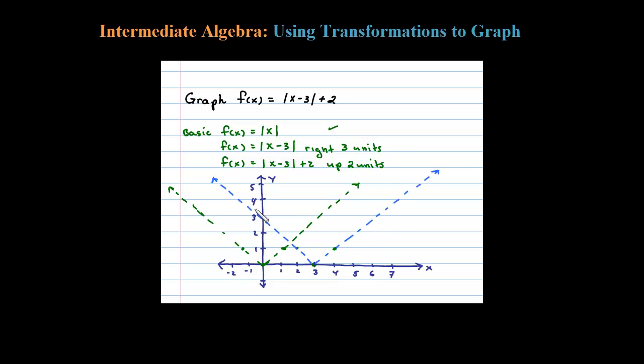Okay, and then the last translation is to shift that up two units. So the vertex would move up two units to here, this point here moving up two units, and this point here moved up two units would be there. So this would be our final graph, let me shade that in blue here.